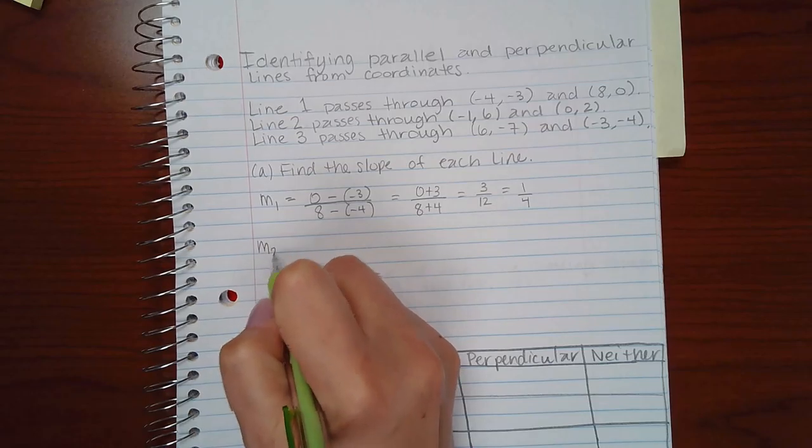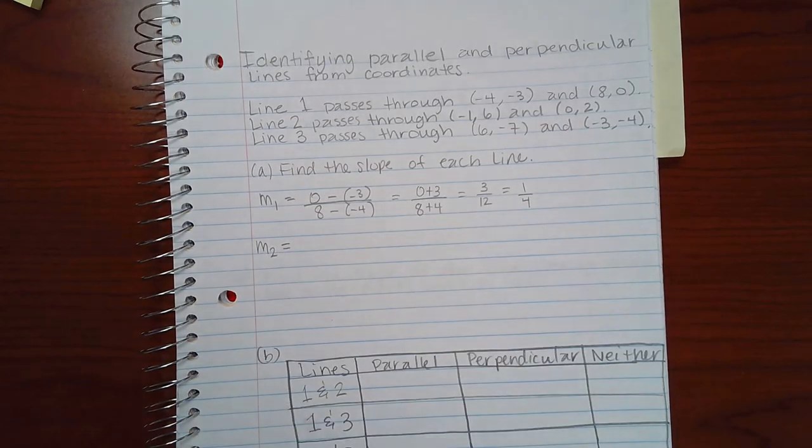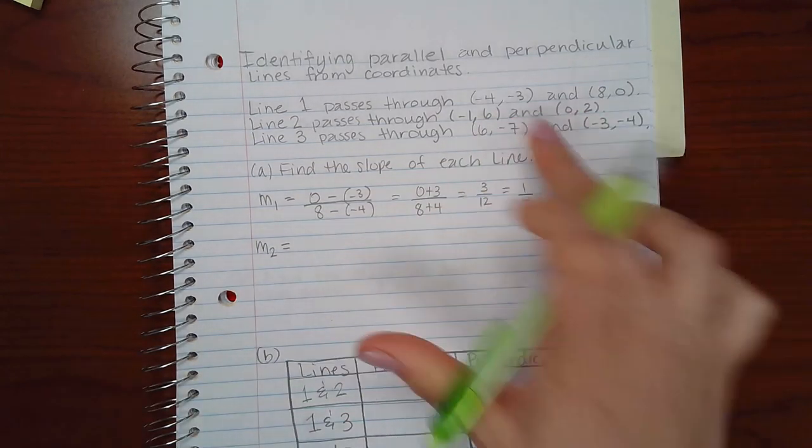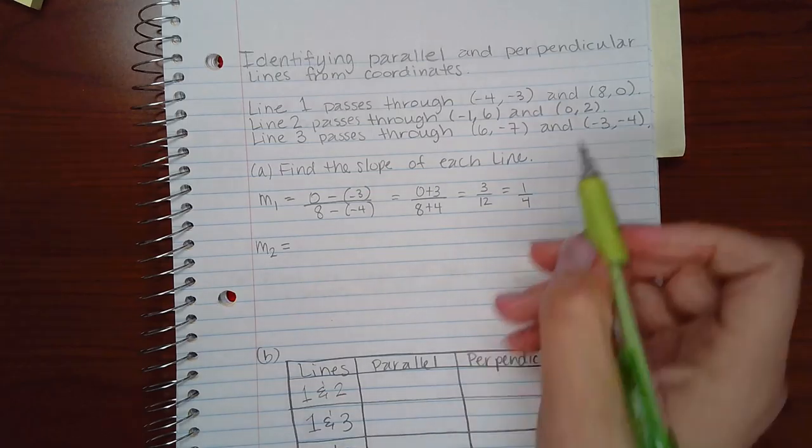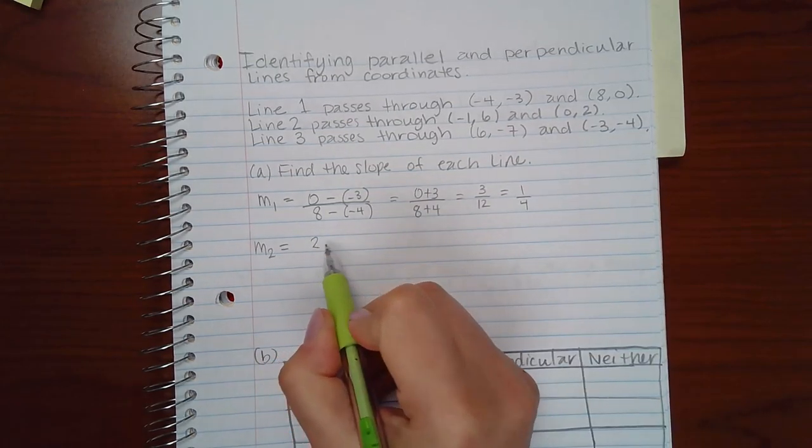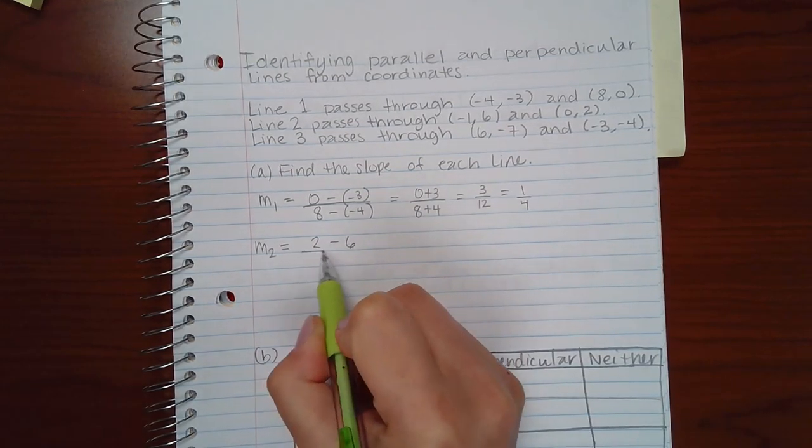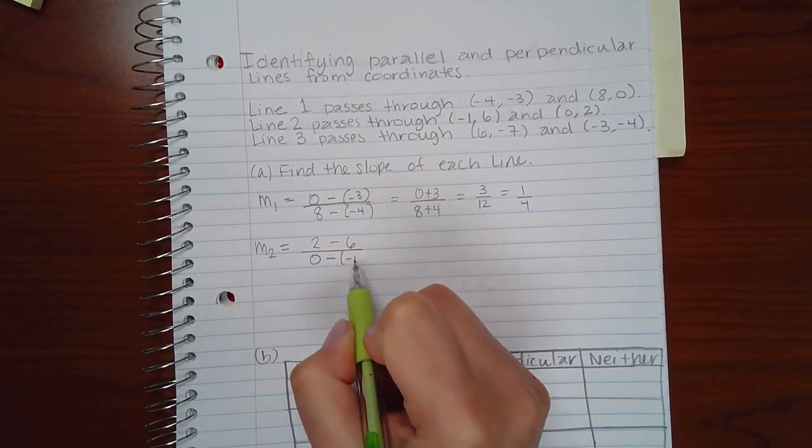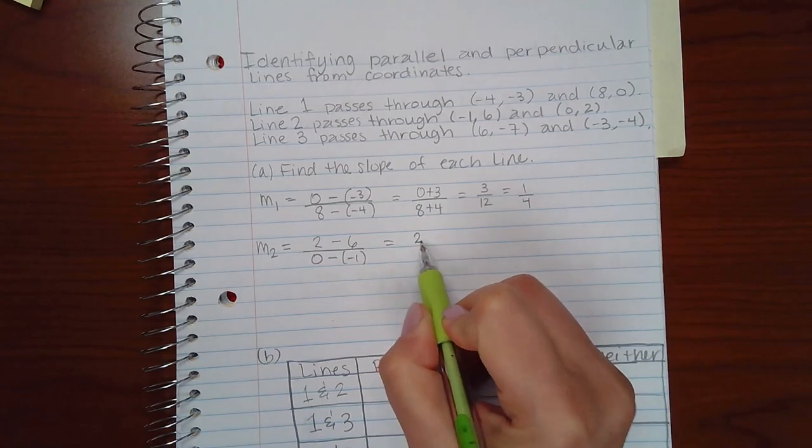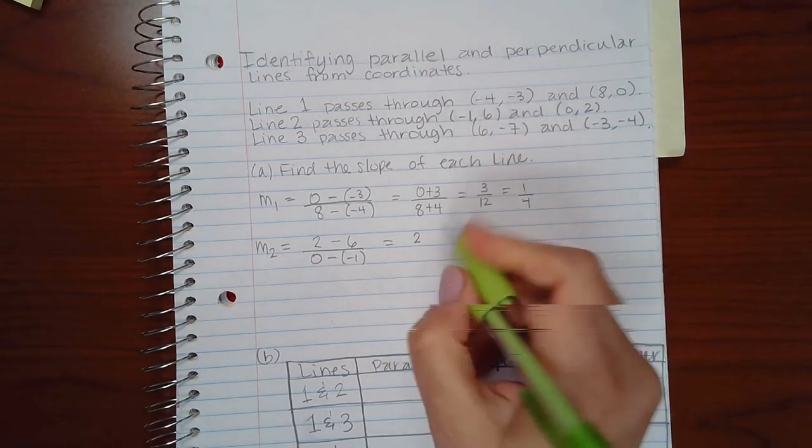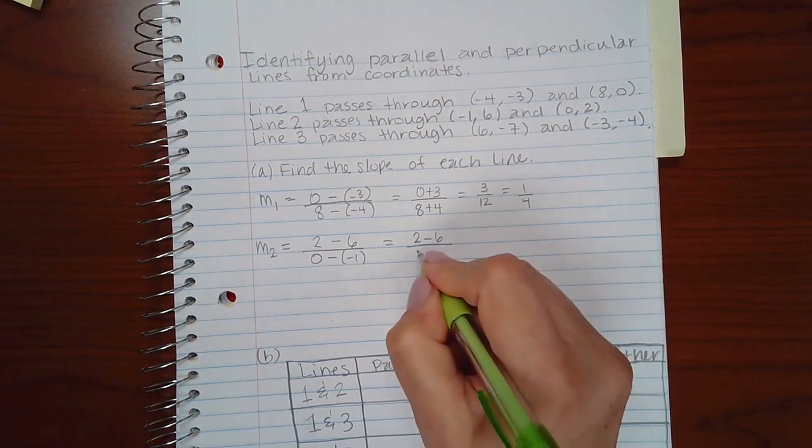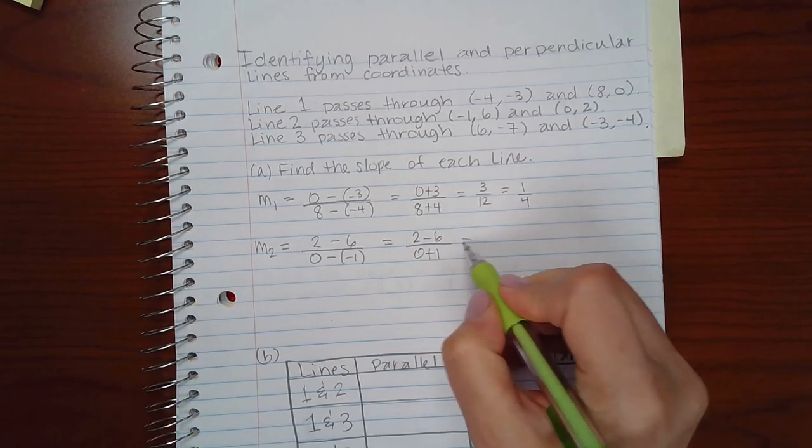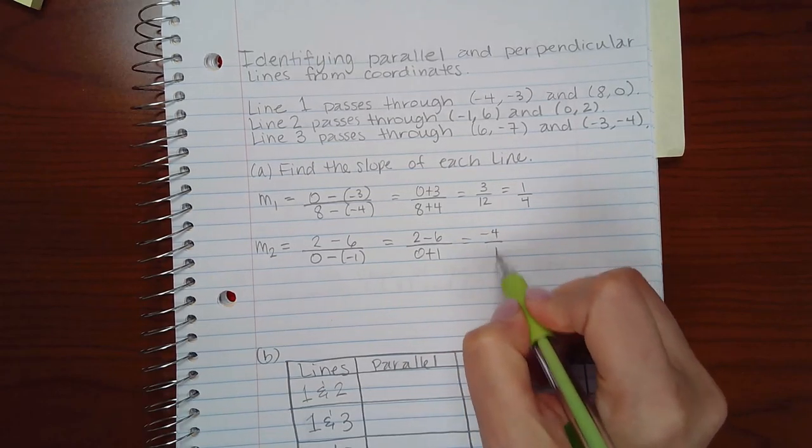Then if I want to find the slope of the second line, I'm going to repeat the same process but with the points from line two. So second y value minus first y value, second x value minus the first x value. So I end up with two minus six over zero plus one, which is negative four over one, which is the same as negative four.